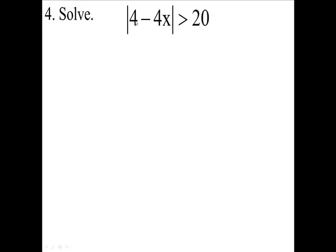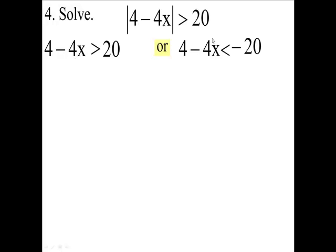Solve the absolute value of 4 minus 4x is greater than 20. We're going to split this into two inequalities. We're going to say 4 minus 4x is greater than 20, or 4 minus 4x is less than minus 20. So one inequality with the absolute value signs becomes two inequalities without it.